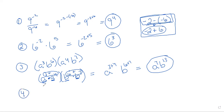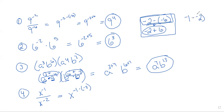Let's go to number 4. We have x to the negative 1 power divided by x to the negative 2 power. Same thing as number 1 — we have the same base, it's a division problem, so we subtract. So negative 1 minus negative 2: we keep the first number the same, change subtraction to addition, and change the second number to its opposite. That gives us a positive 1. When in doubt, use your calculator. So x to the first power, which is the same as just a normal x.